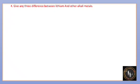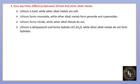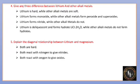Give the differences between lithium and other alkali metals. Lithium is hard while other alkali metals are soft. Lithium forms monoxide (Li2O) while other alkali metals form peroxide and superoxide. Lithium forms nitride while other alkali metals do not form nitrides.